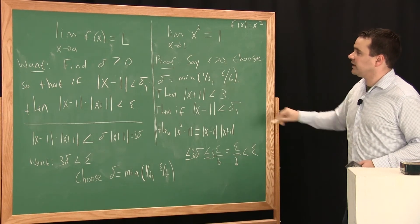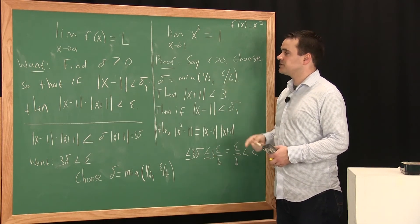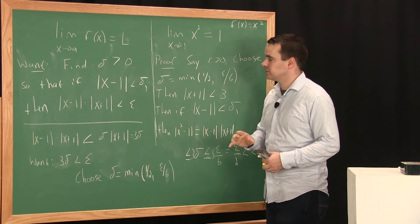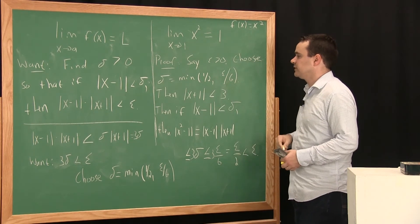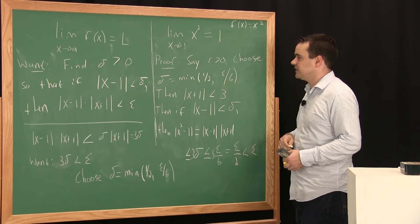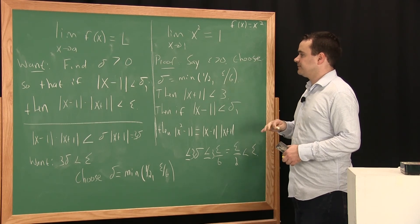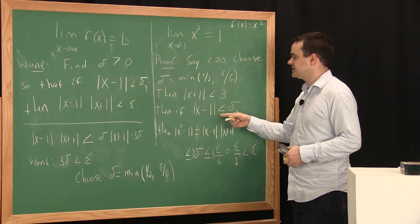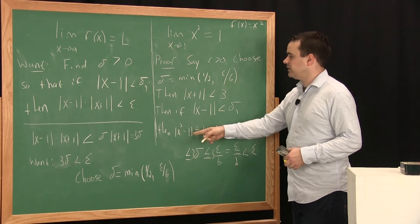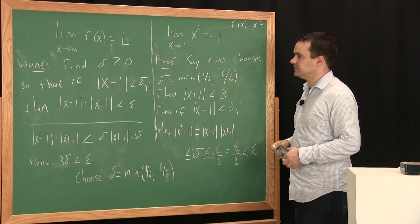That's how you cleanly write a formal proof of the fact that as x goes to 1, x squared also goes to 1. It's a two-step process. First, you investigate and figure out what delta is going to be equal to. Once you have that, you quickly write down the condition: if delta equals this, then as long as |x - a| < delta, we have |f(x) - f(a)| < epsilon.